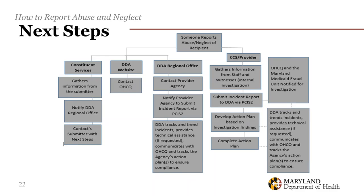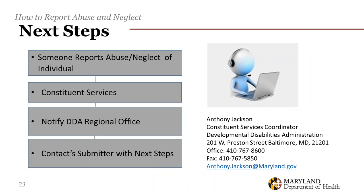When someone contacts constituent services, our constituent services coordinator Anthony will collect some preliminary information and contact the DDA regional office to notify the regional quality enhancement director of the alleged incident. Based on the information gathered from the regional QE director, Anthony will contact the submitter and provide them with next steps and the contact information of the regional QE director handling the allegation.